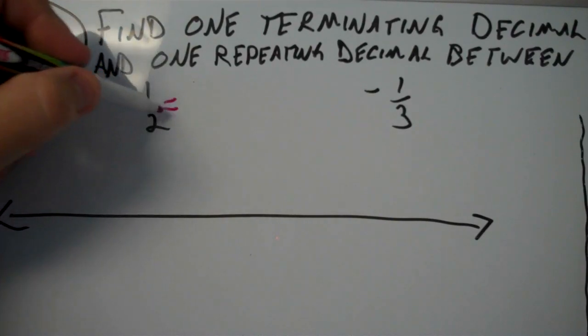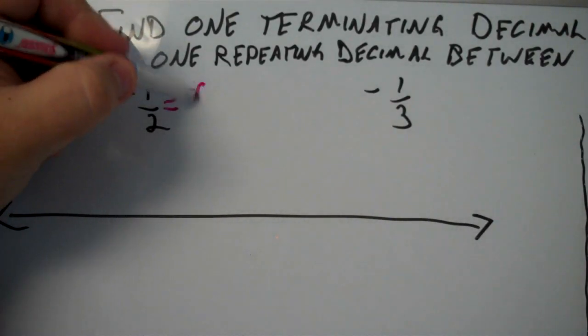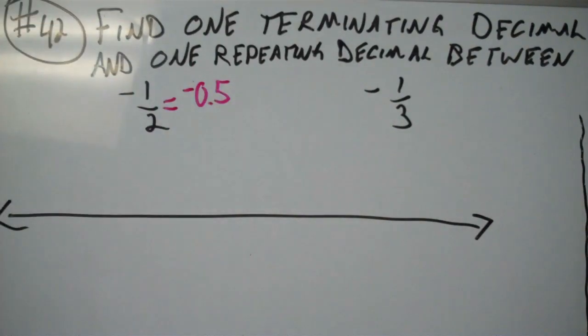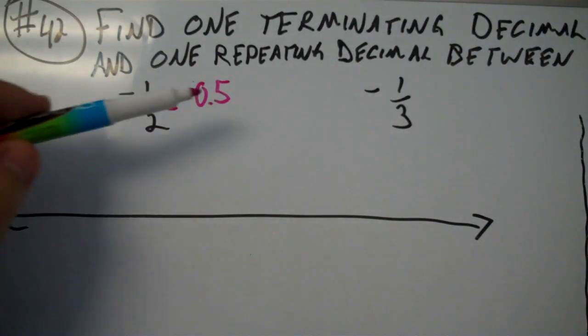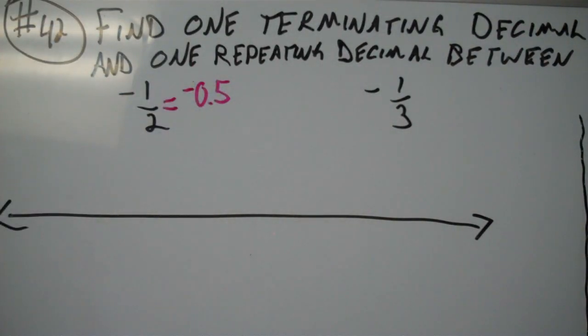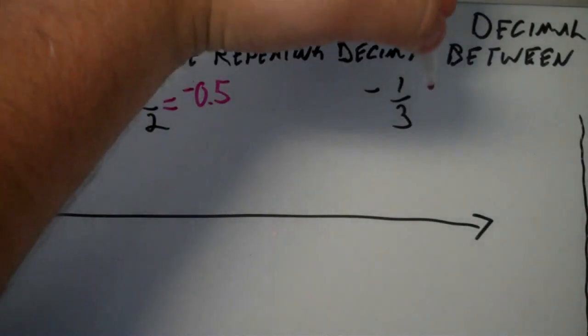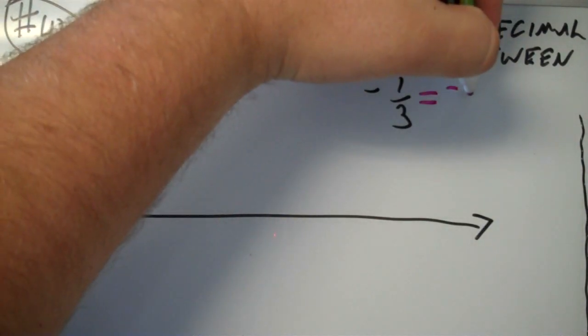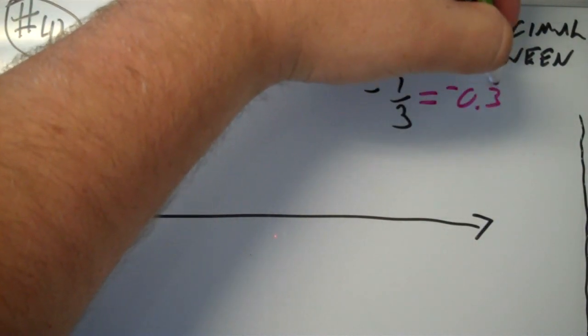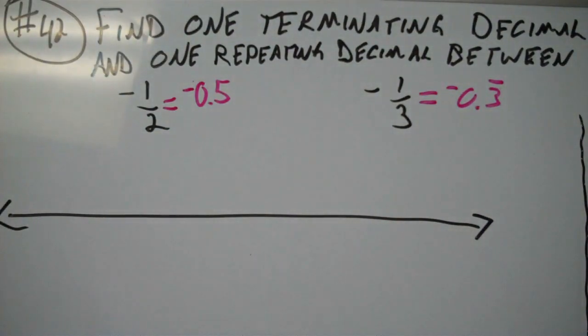So negative one-half converts to negative 0.5, which makes sense because this means five-tenths, and five-tenths would be one-half if you simplified it. Negative one-third simplifies to or can be converted into negative 0.3 with a bar over the top, meaning the three repeats.